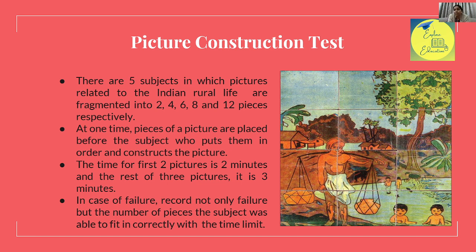The fourth sub-test is the Picture Construction Test. There are 5 subjects — pictures related to Indian rural life — fragmented into 2, 4, 6, 8, and 12 pieces respectively. At one time, the pieces of a picture are placed before the subject, who must put them in order and construct the complete picture. The time for the first two pictures is 2 minutes, and the remaining three pictures are given 3 minutes.